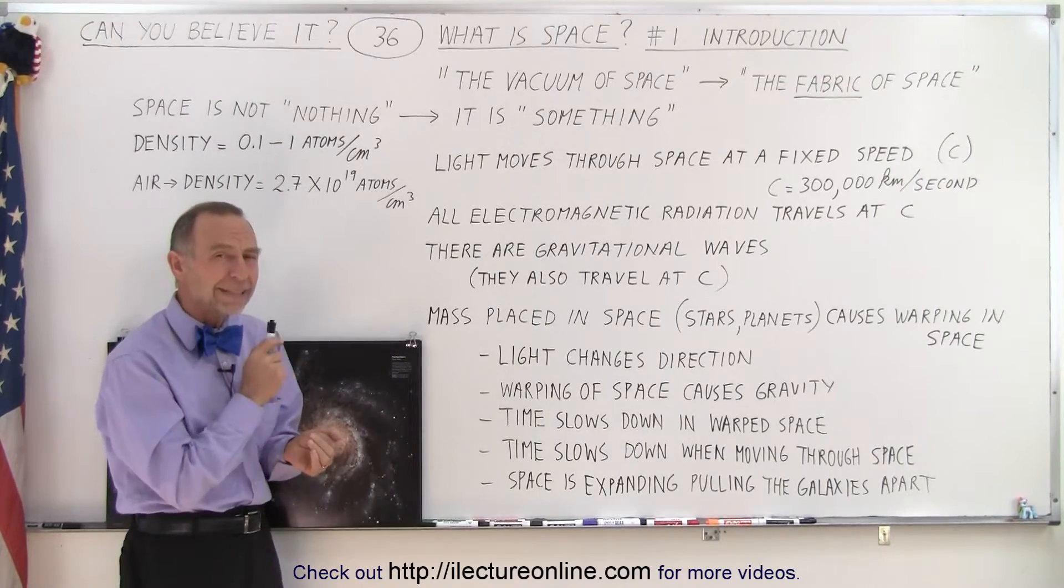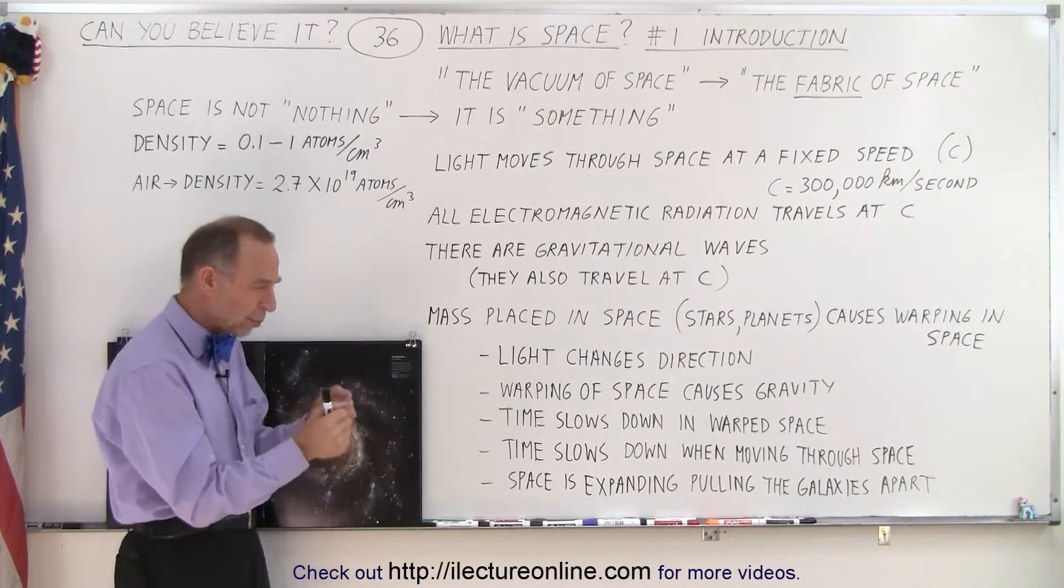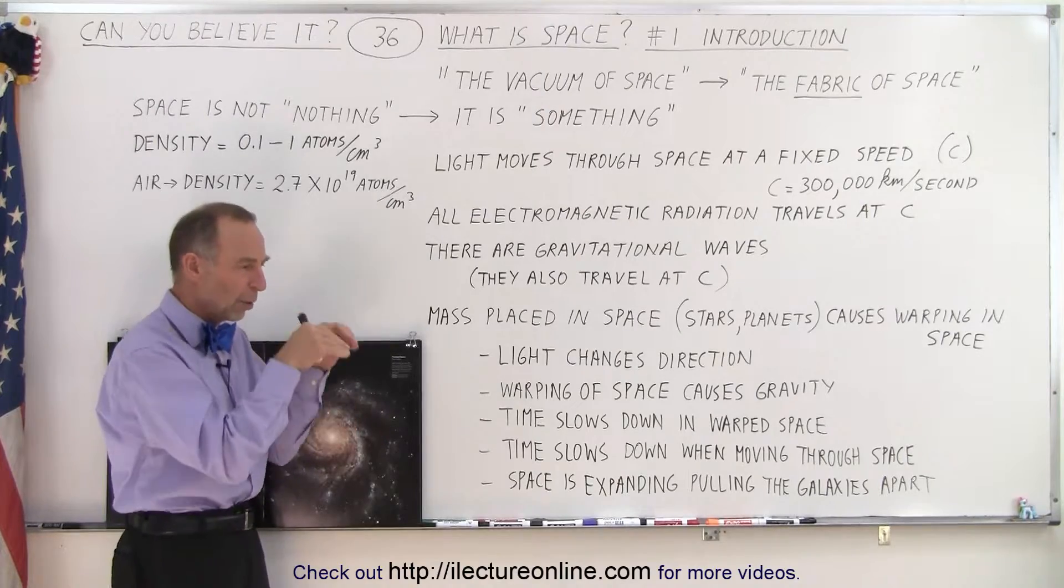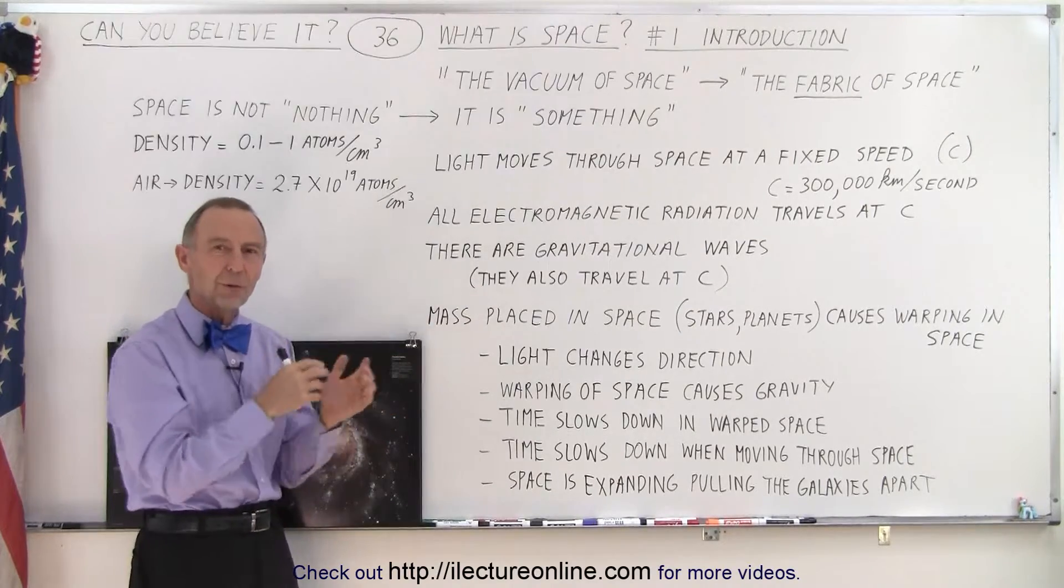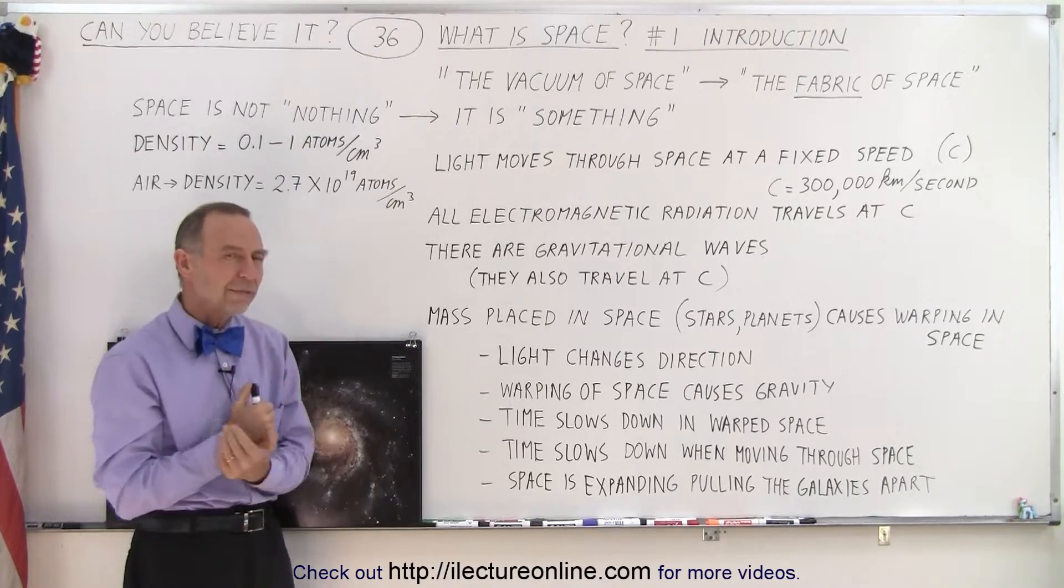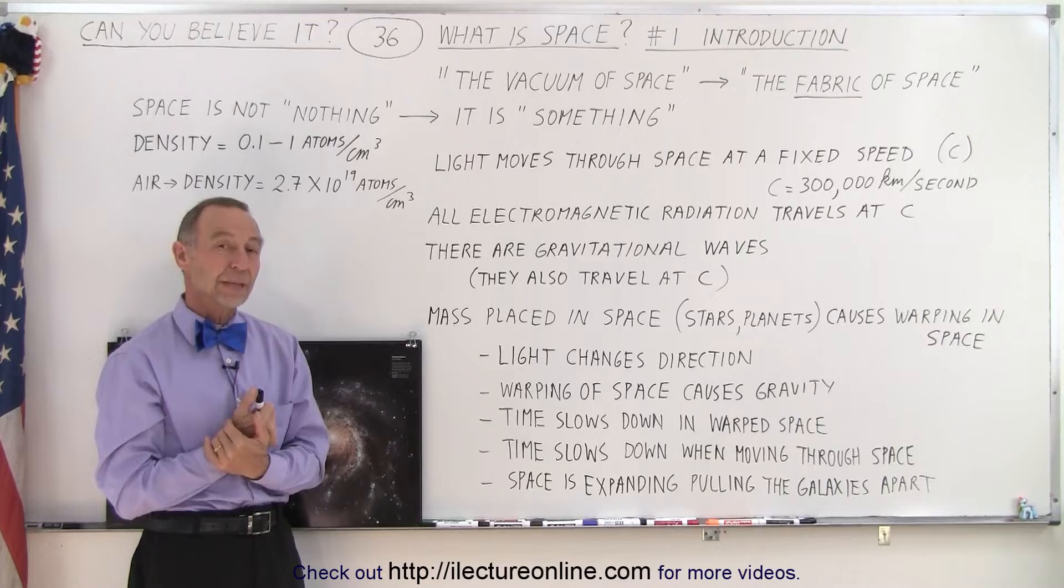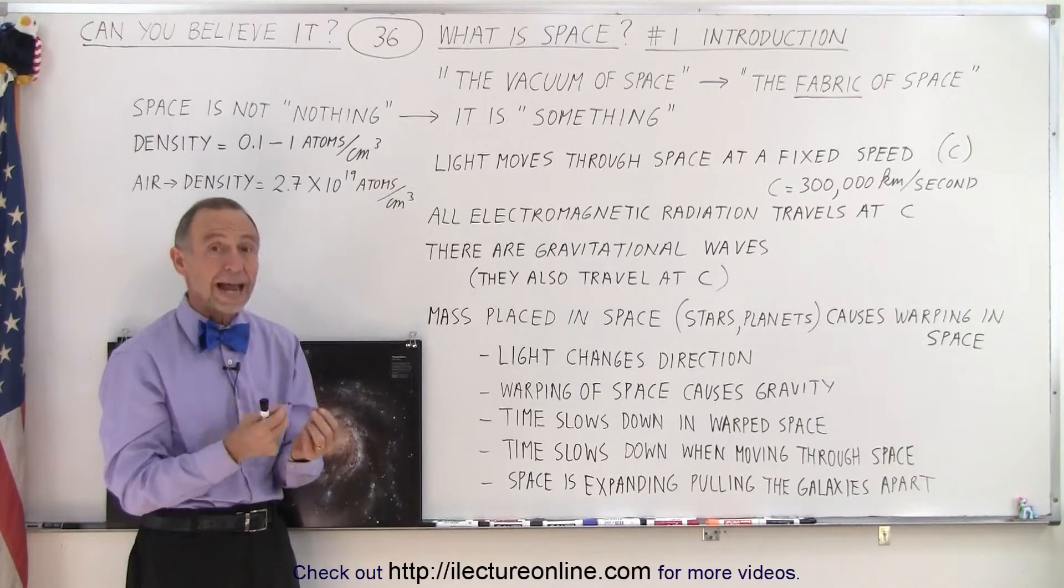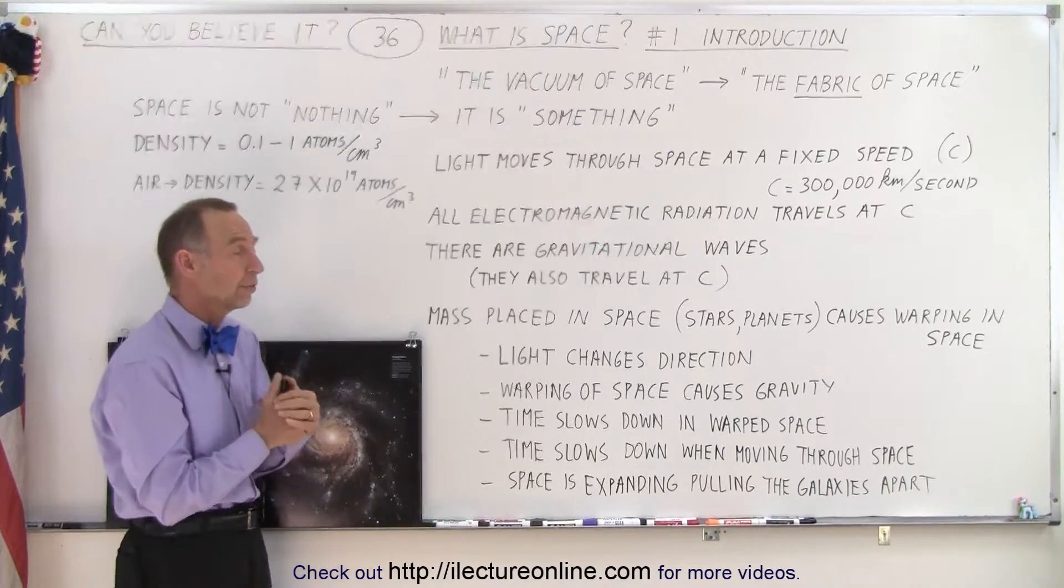We also have gravitational waves. In other words, when we make a disturbance in space, we have waves in space traveling in all directions. And they also travel at the speed of light. And just a few years ago, we were actually able to measure those gravitational waves.